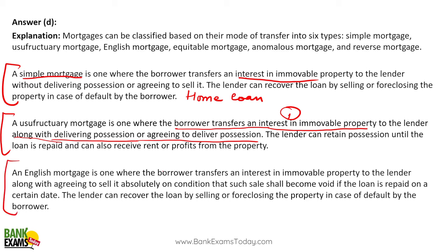In the English mortgage, the borrower transfers interest in the immovable property and also agrees to sell it absolutely on the condition that such sale shall become void if the loan is repaid. If the borrower is unable to repay on time, the property will be sold to the lender at a pre-decided price — you agree to sell it in case you are unable to repay the loan.